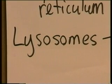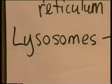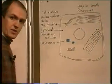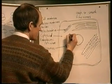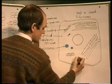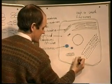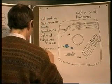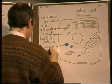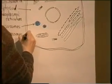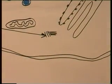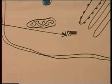Lysosomes are another organelle found in the cytosol. Other structures that you can see, if you look carefully, are two spindly-like structures in the cytoplasm. These are referred to as centrosomes — small spindly-looking structures in the cytoplasm.